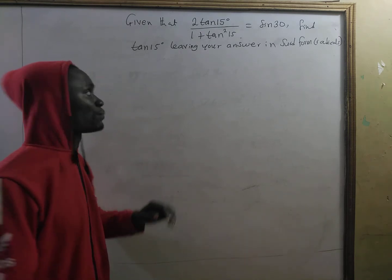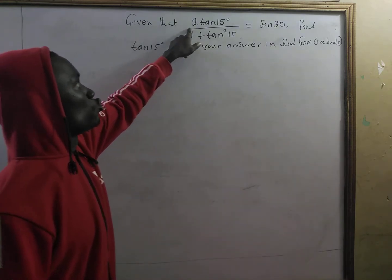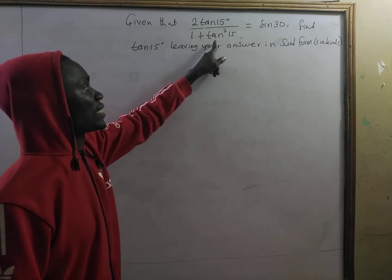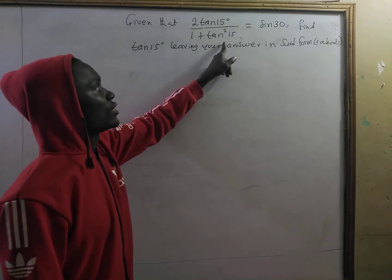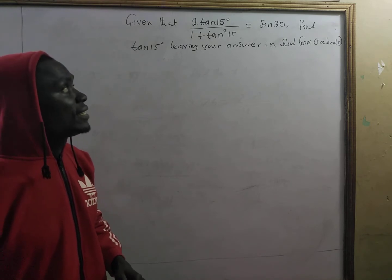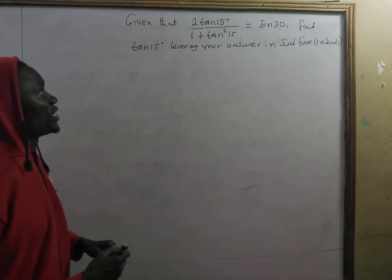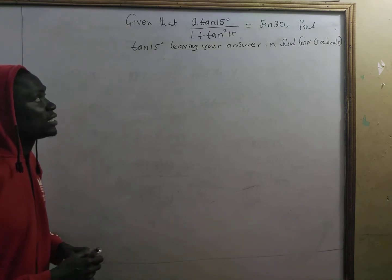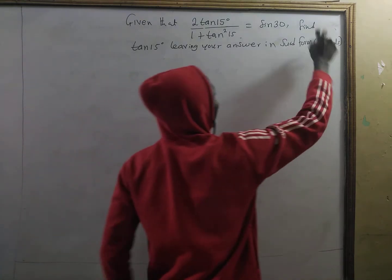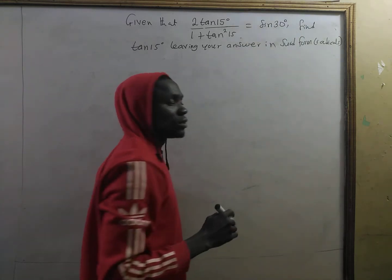Let's look at the question. Given that two times tangent of 15 degrees divided by one plus tangent squared of 15 is equal to sine 30 degrees, you have to find tangent of 15 degrees, leaving our answer in surd or radical form.